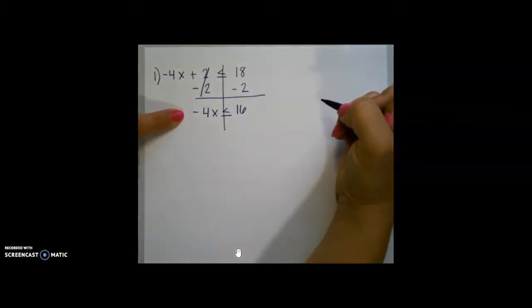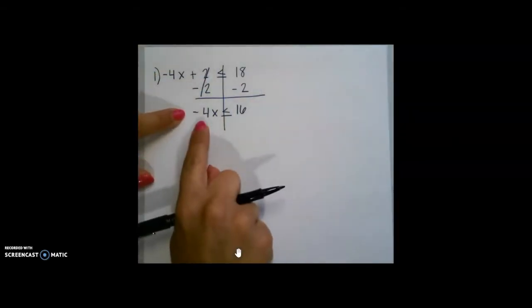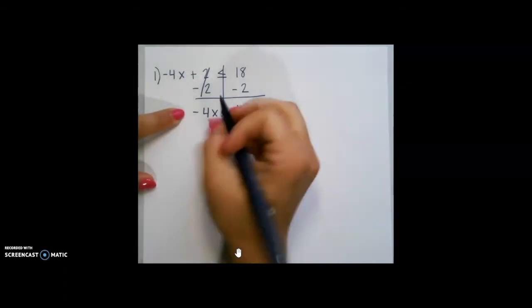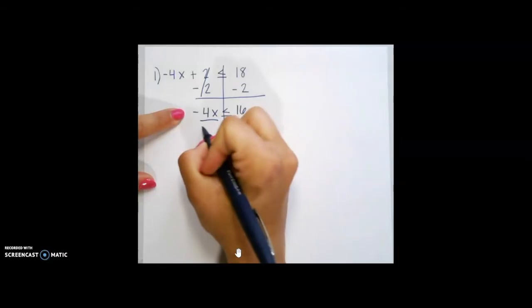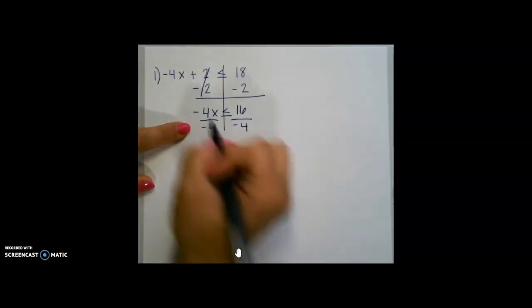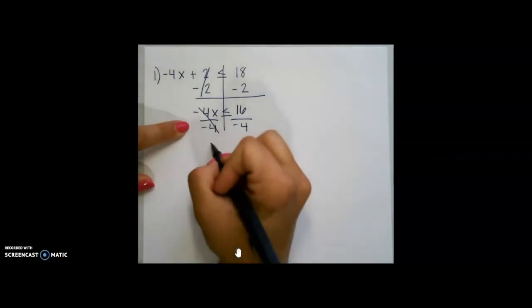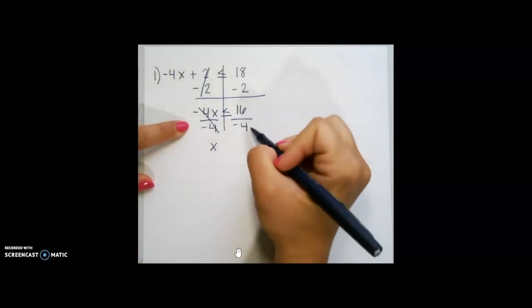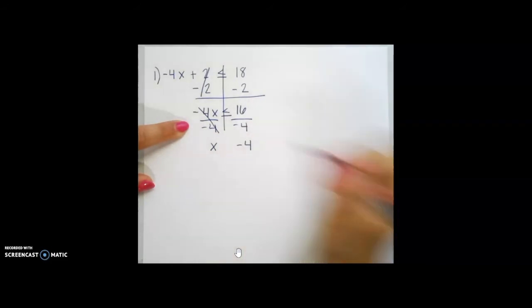This is the part where we see what we need to do since I have a negative 4 on this side. The inverse of multiplication is division, so I will divide by negative 4 on both sides. It's going to cancel out on the left and leave me with x, and 16 divided by negative 4 is going to give me negative 4.